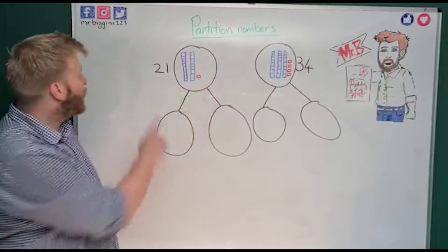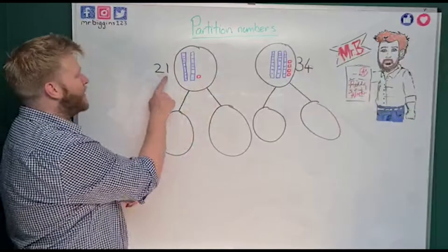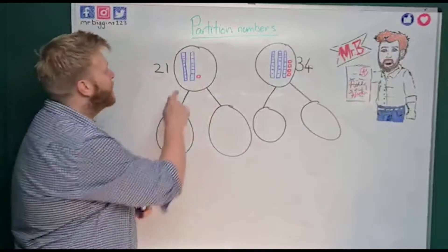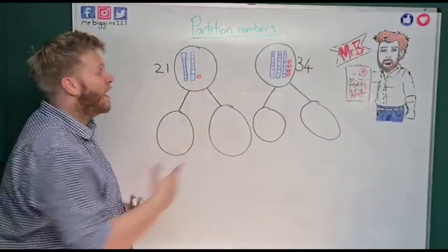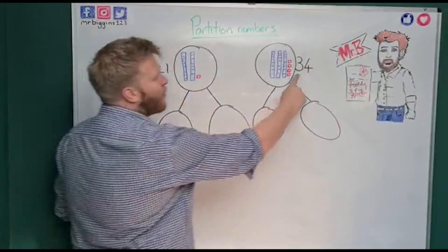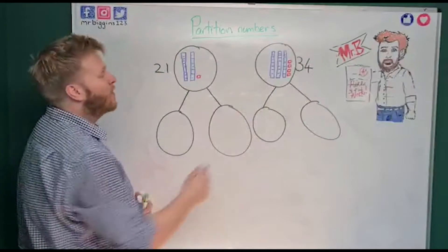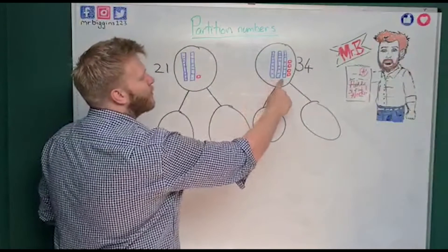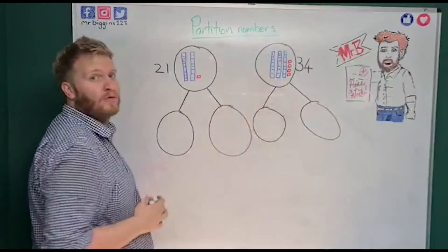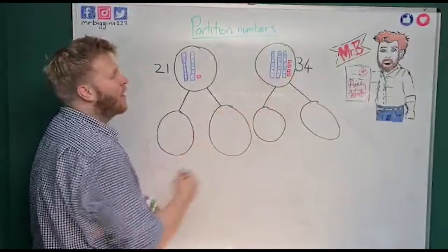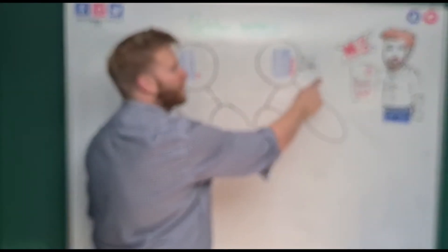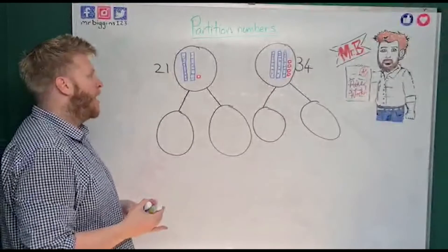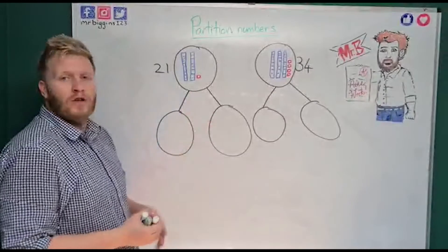We've got two numbers on our board. The first number we've got is 21 and we can see it's 21 because we've got two tens and one one. And over here we've got 34 and we can see it's 34 because we've got three tens — one, two, three — in our tens column and four ones — one, two, three, four — in our ones column.